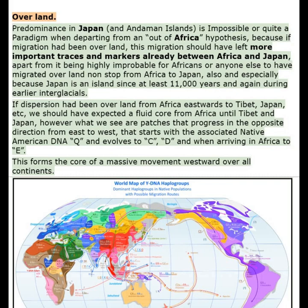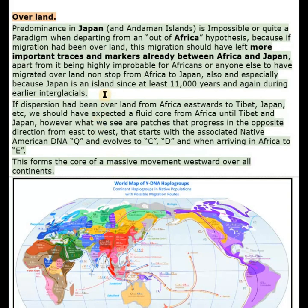Predominance in Japan and Andaman Islands is impossible, or quite a paradigm, when departing from an out-of-Africa hypothesis, because if migration had been overland, this migration should have left more important traces and markers already between Africa and Japan — apart from it being highly improbable for Africans or anyone else to have migrated overland non-stop from Africa to Japan, especially because Japan is an island since at least 11,000 years. If dispersion had been overland from Africa eastwards to Tibet and Japan, we should have expected a fluid core from Africa until Tibet and Japan. However, what we see are patches that progress in the opposite direction, from east to west, starting with the associated Native American DNA Q, evolving to C and D, and when arriving in Africa to E.